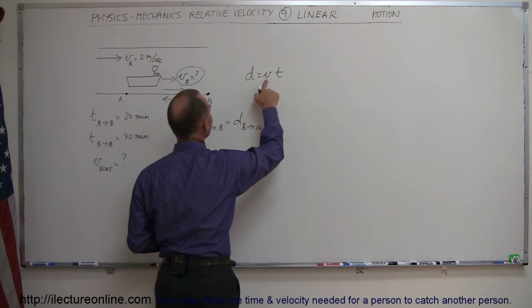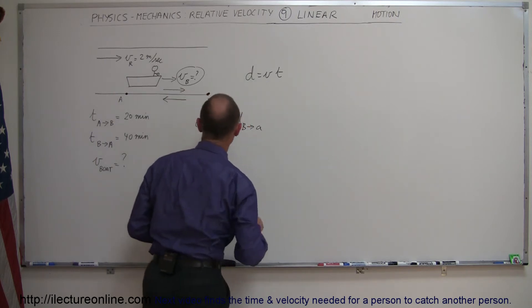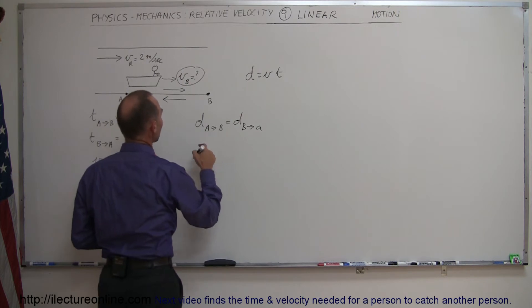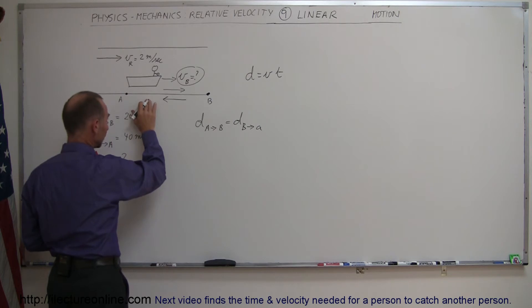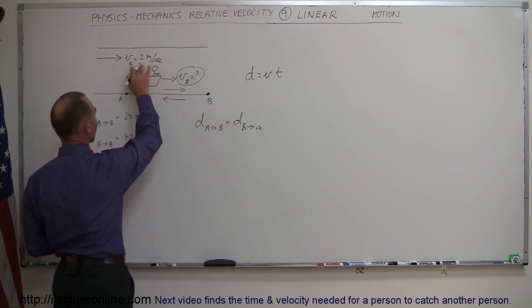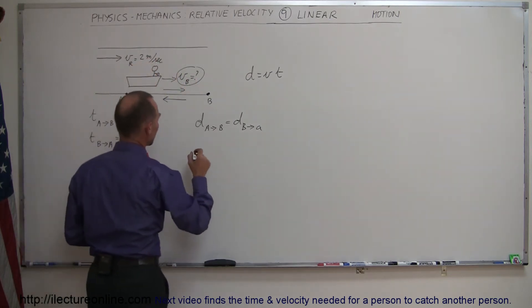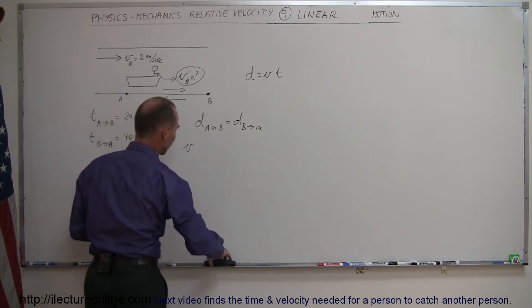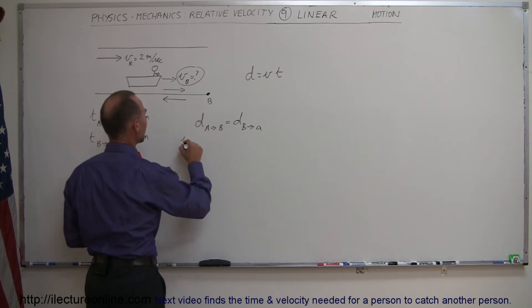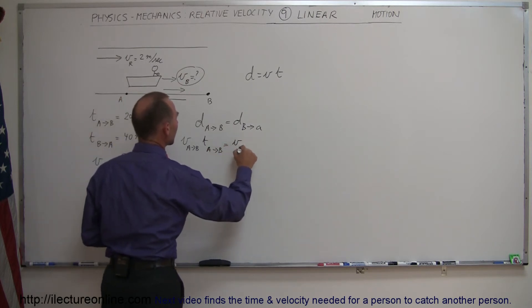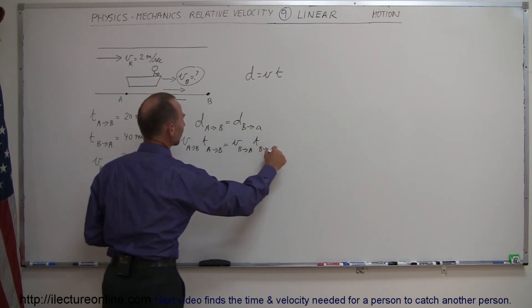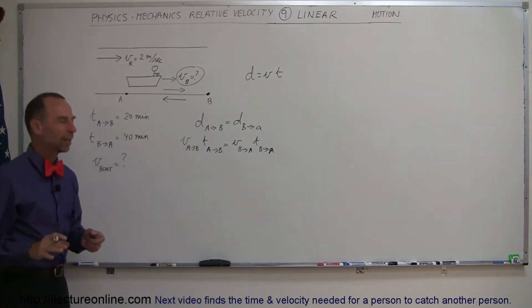So now we have to plug in the velocity and the time for each occasion here. So if we're going from A to B, the velocity of the boat relative to the shore will equal the velocity of the boat relative to the water plus the velocity of the water of the river. So actually let me write it like this. So this will be V from A to B times the time from A to B, and that must equal V from B to A times the time from B to A. There we go, so that way at least it makes a little more sense.